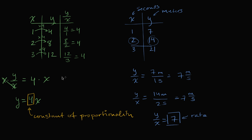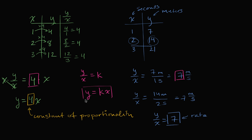Generally, if I'm dealing with a proportional relationship, I can always write an equation of the form y over x equals k, where k is some constant. In the first example, k was four; in the second, k is seven. Multiplying both sides by x gives y equals kx, where k is our constant of proportionality. It's a simple but important idea — you'll see this many times in your mathematical career, and it's great to recognize it as a proportional relationship.